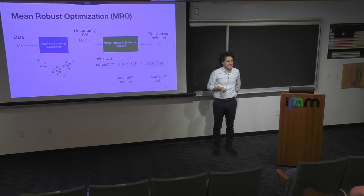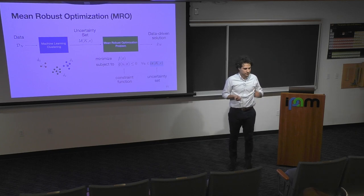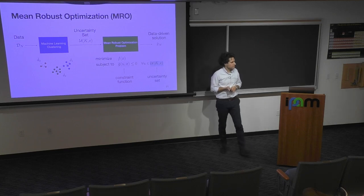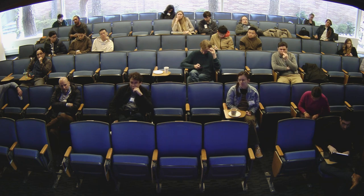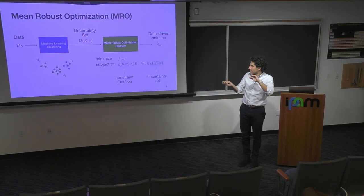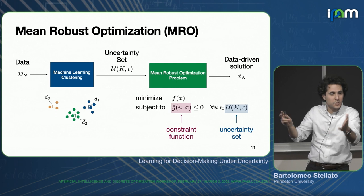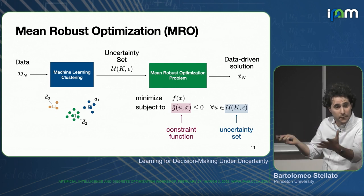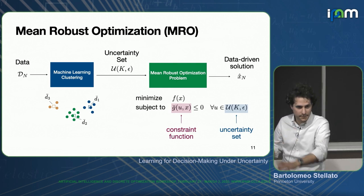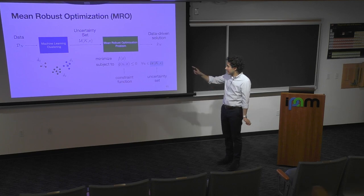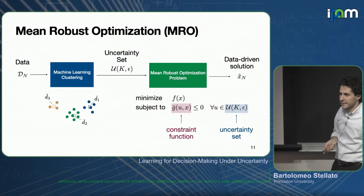Regarding the clustering method choice: the bounds we get depend on how well you cluster, so the choice of method does matter — we judge it by the clustering objective function afterwards. Capital K is the number of clusters, and little k identifies one particular cluster.